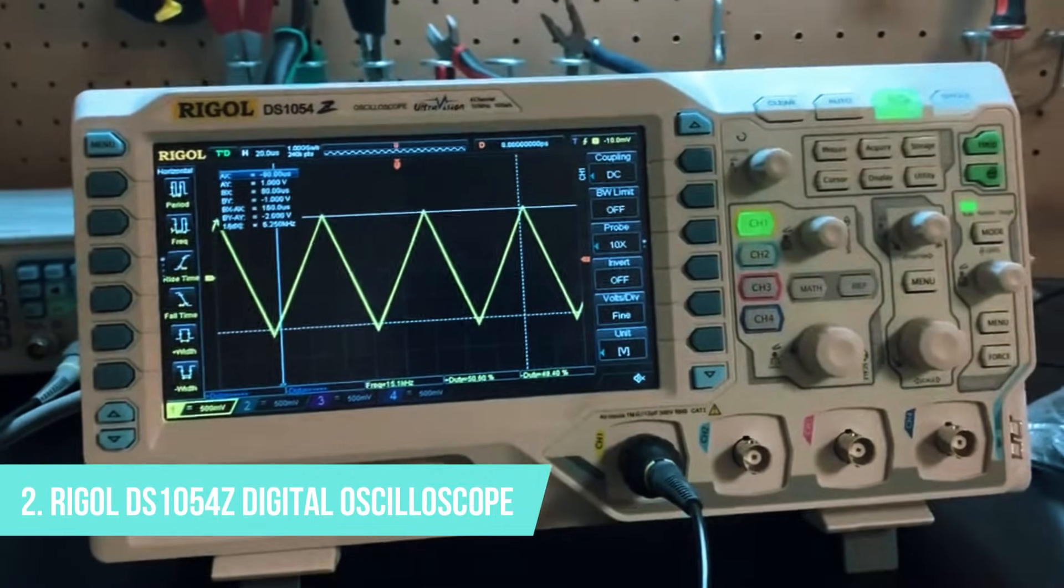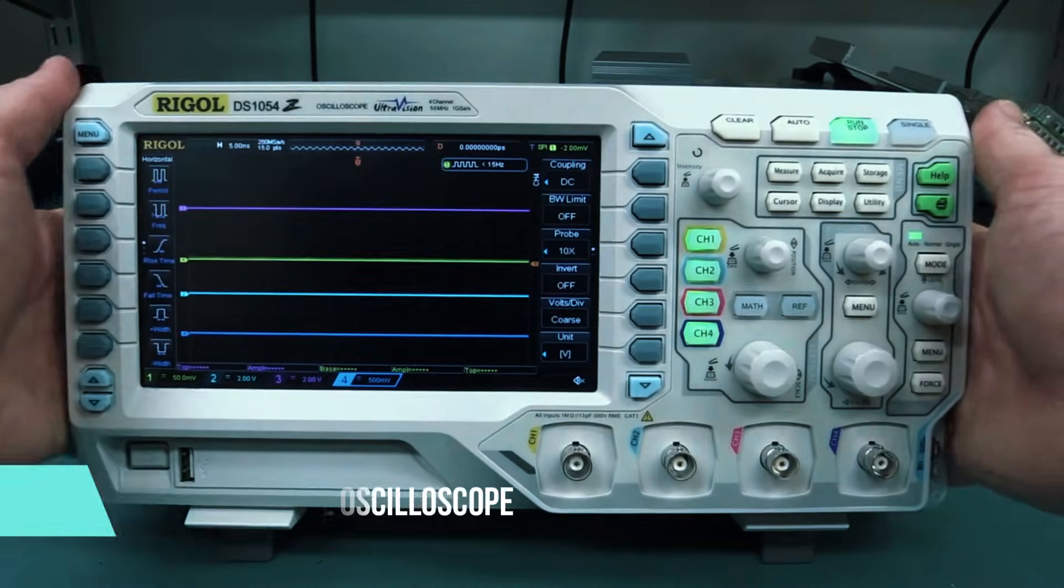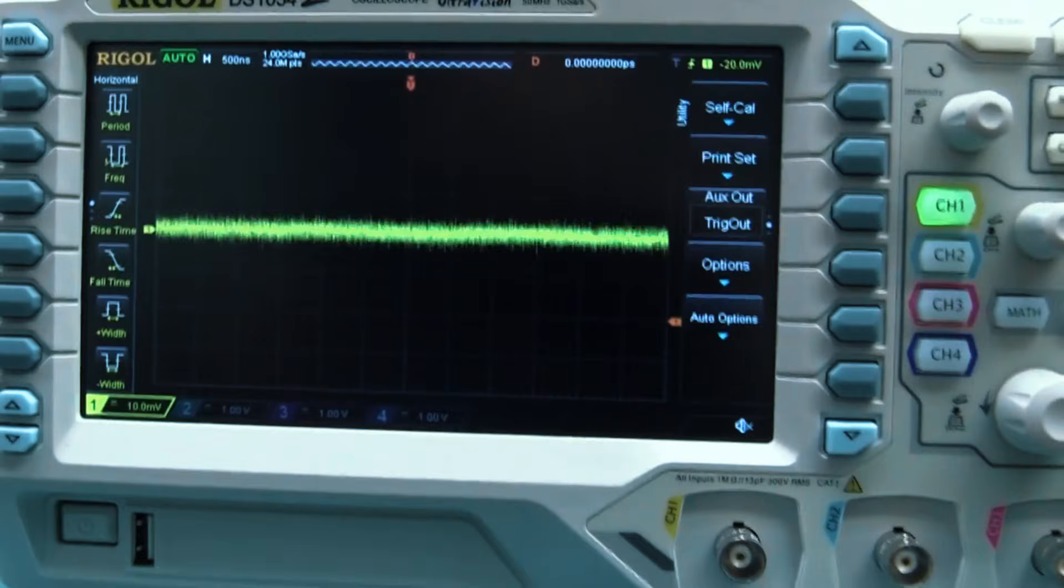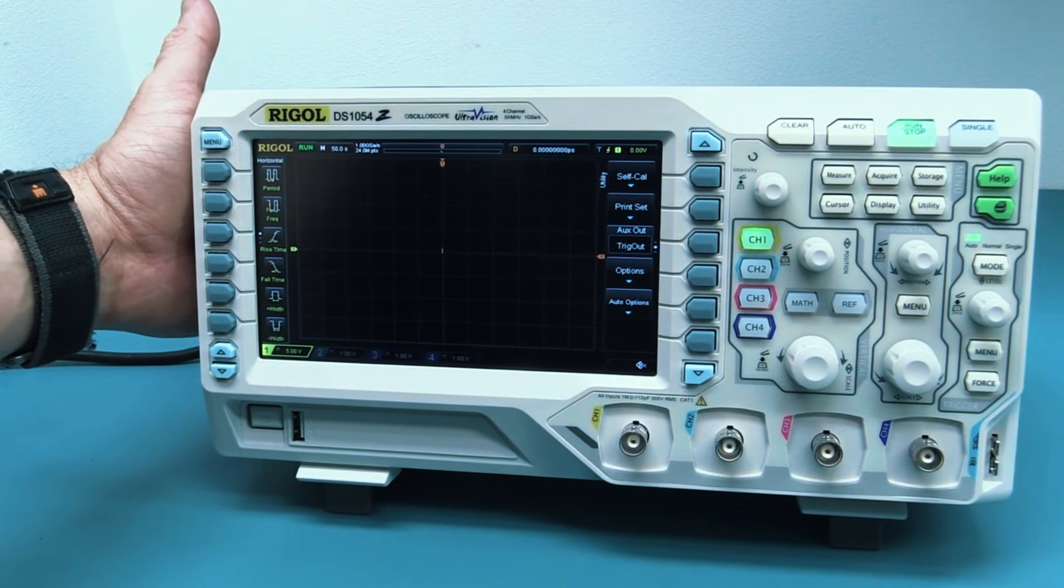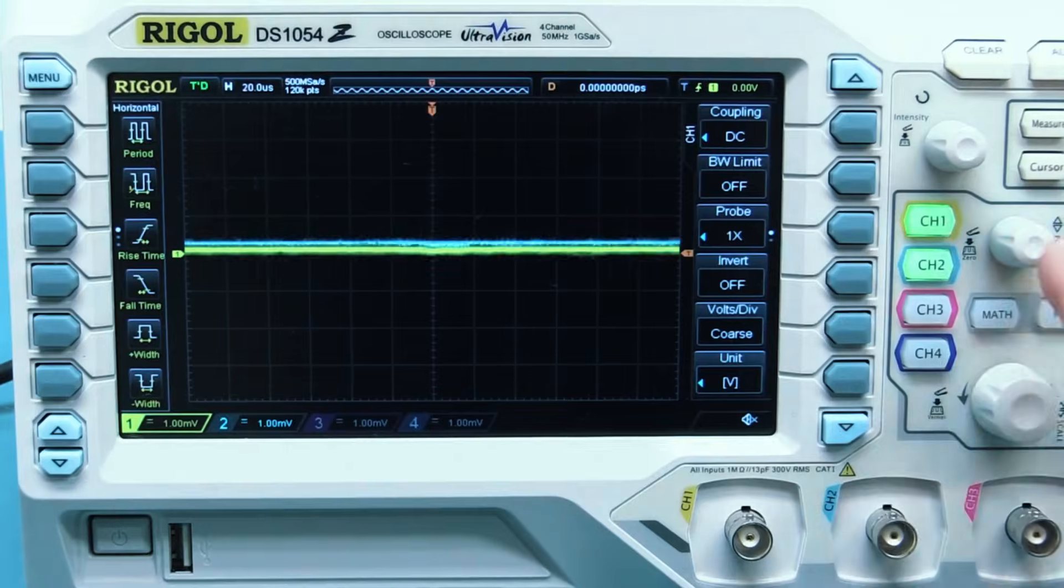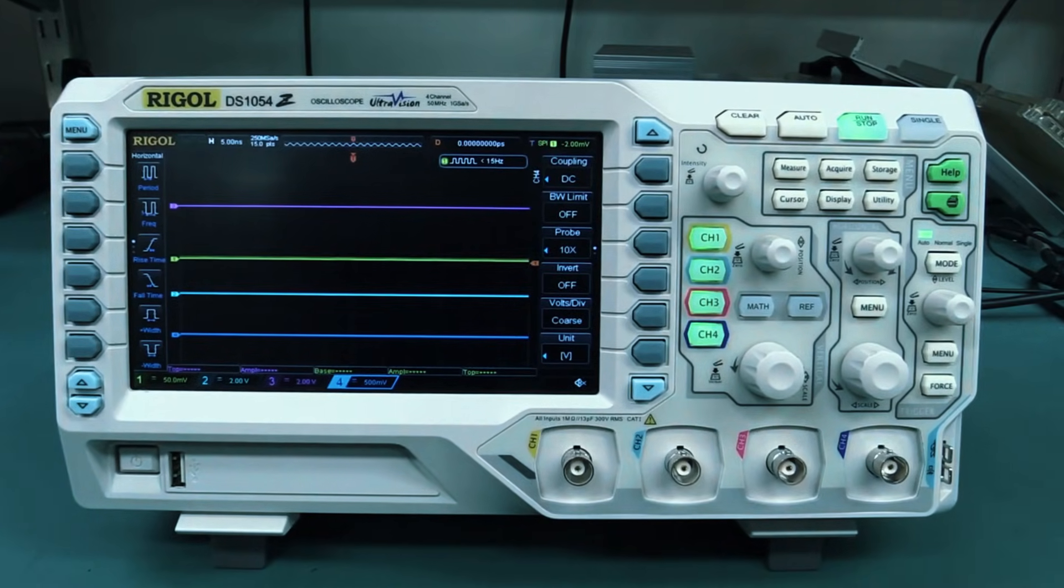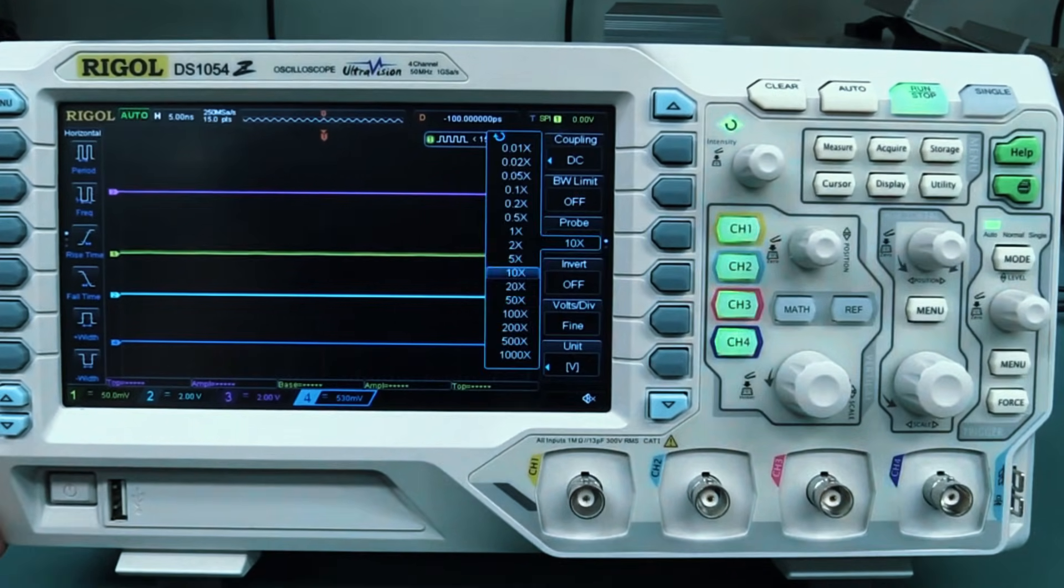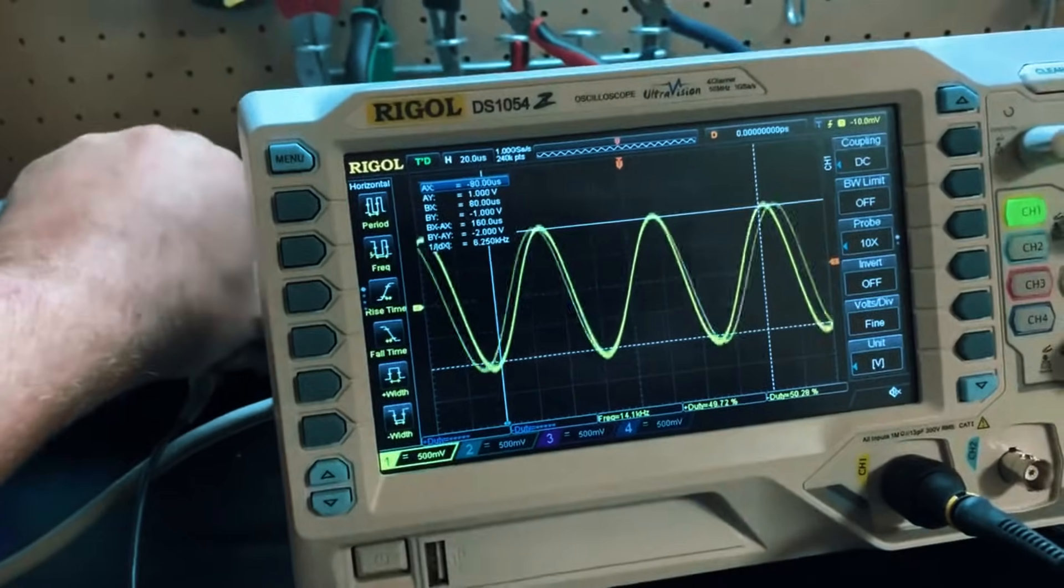Number 2: Riggle DS1054Z Digital Oscilloscope, Best All-Rounder for Engineers and Enthusiasts. Ah, the Riggle DS1054Z, a fan favorite and one of the most widely recommended digital oscilloscopes in its price range. This model nails the sweet spot between affordability, professional features, and user-friendliness, making it a go-to choice for engineers, students, and electronics enthusiasts. Unlike some budget-friendly scopes that cut corners, the DS1054Z packs serious power, offering deep memory, multiple channels, and upgradable firmware that ensures it remains useful for years to come.